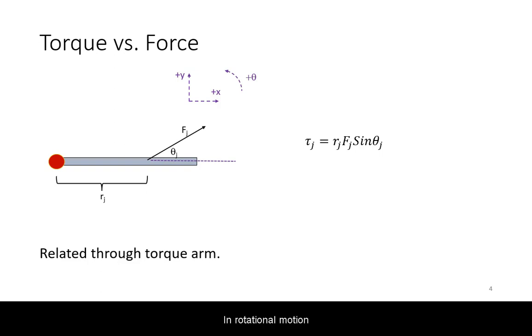In rotational motion, forces produce torque. The torque produced depends on the magnitude of the force and the torque arm, sometimes referred to as lever arm.